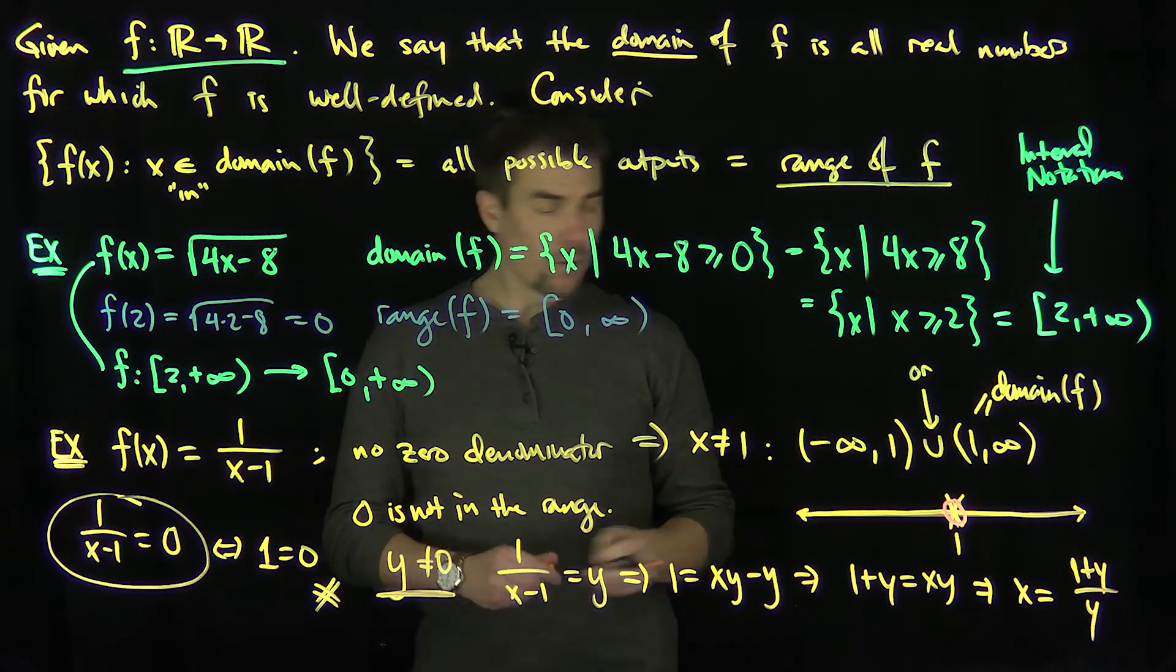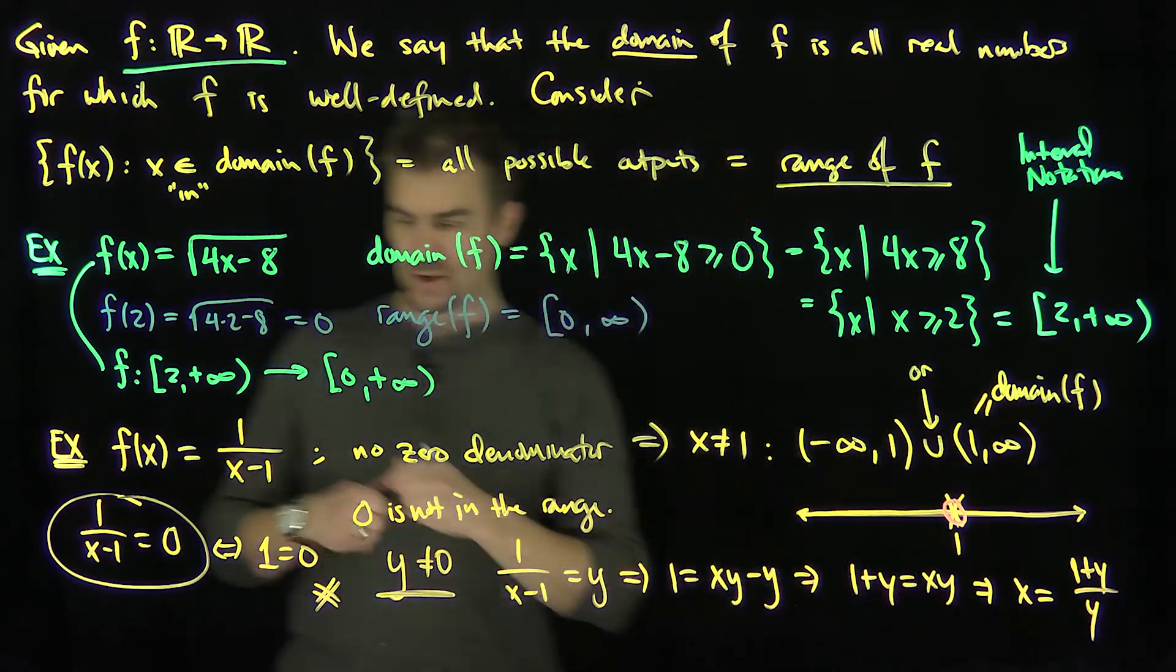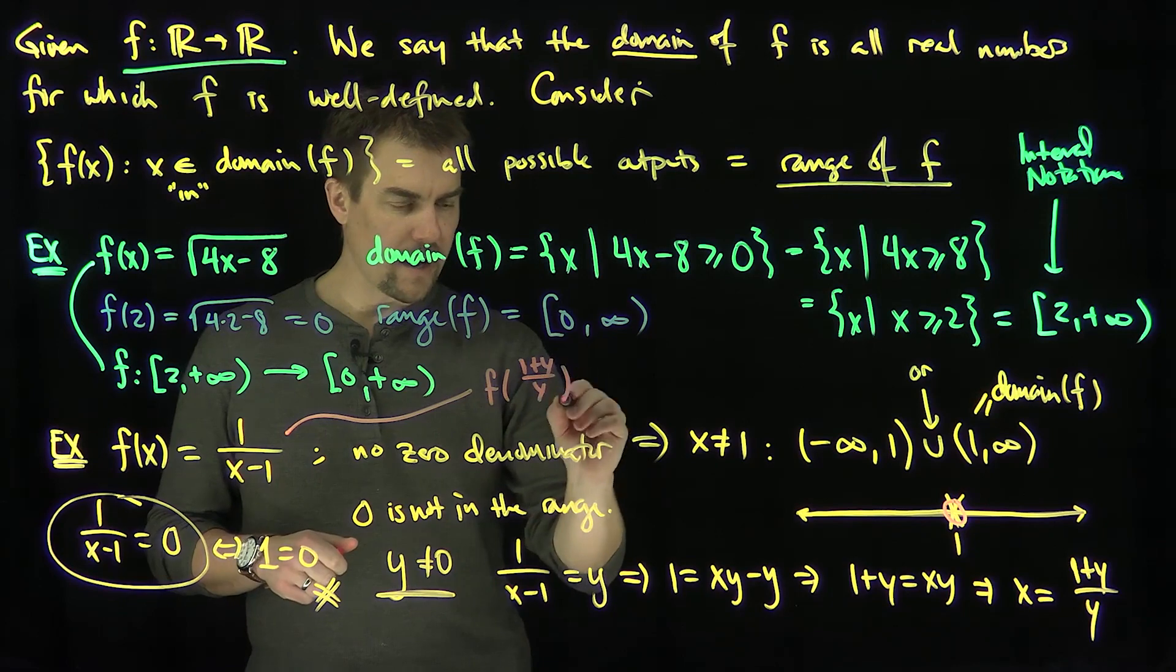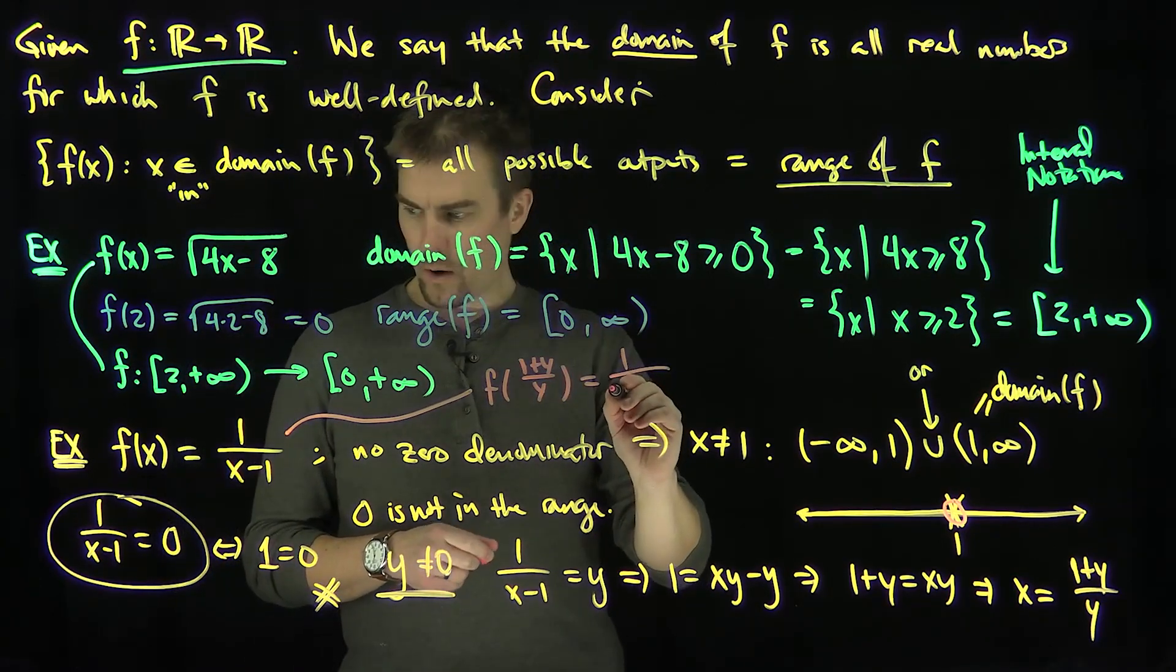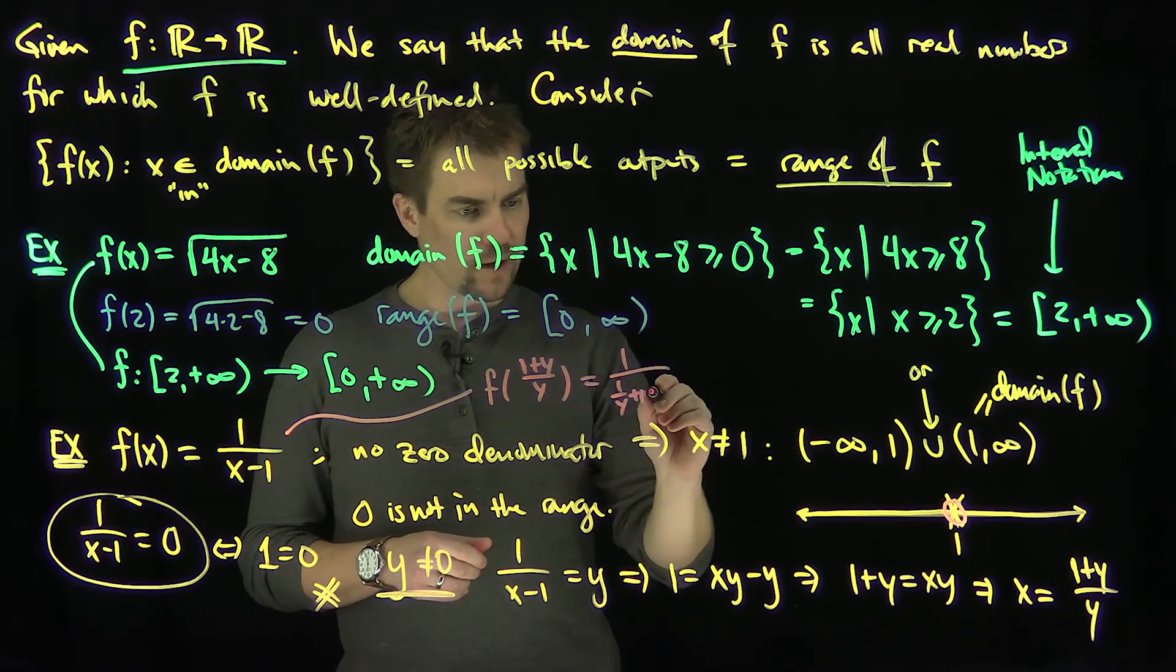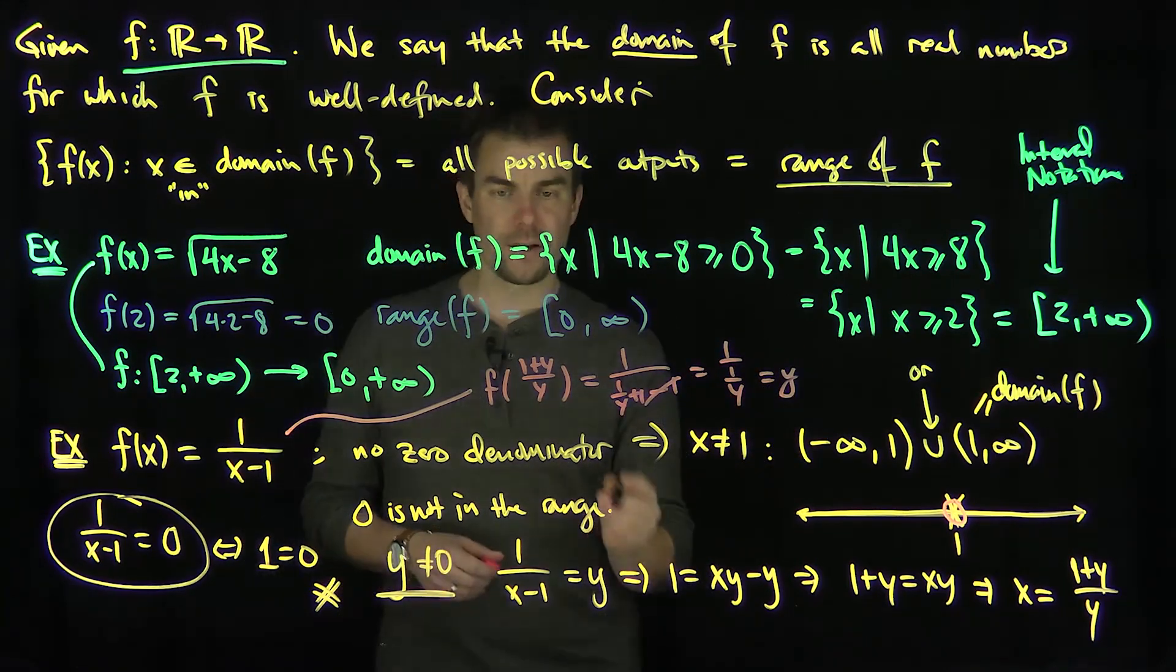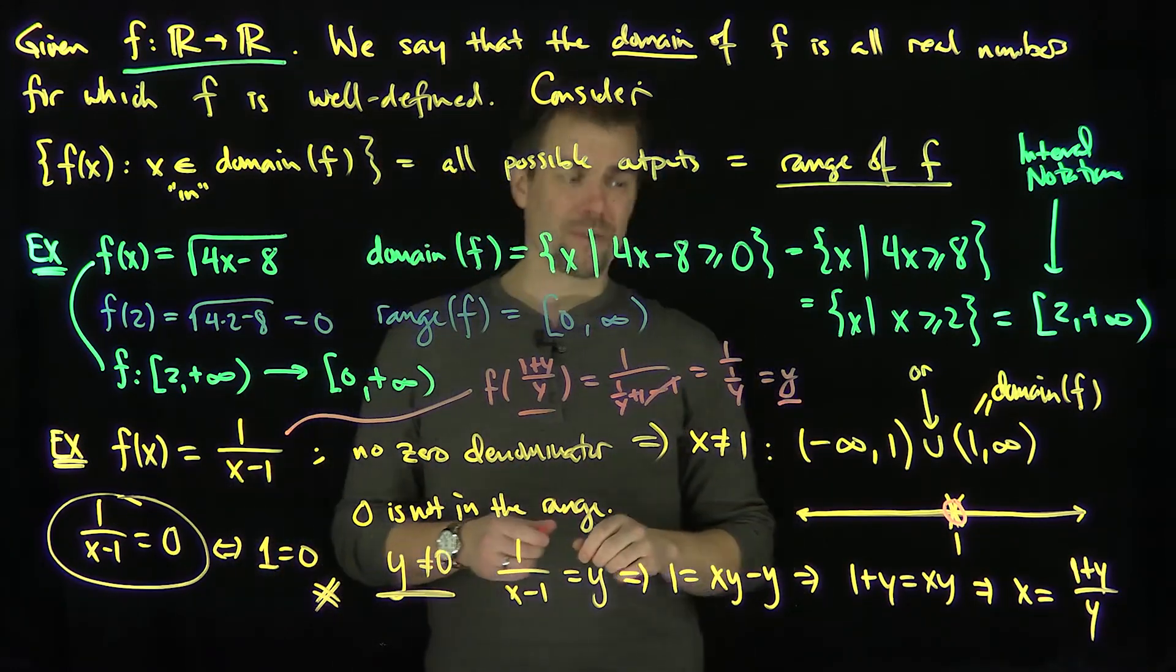So if I plug in this value of x into our function, what will we get? Let's test it out and see just to make sure it works. If I look at f of 1 plus y over y, that will be 1 over... this will be 1 over y plus 1 because y over y is 1 and then minus 1. So the ones are going to cancel and you're going to have 1 over 1 over y, which is just equal to y. So if I plug this value into my function, I will output this value y.